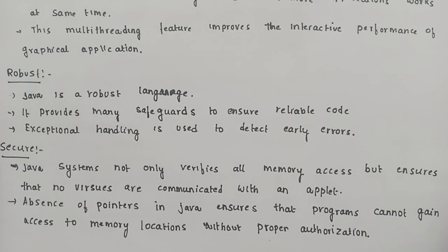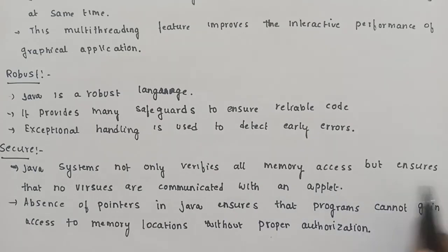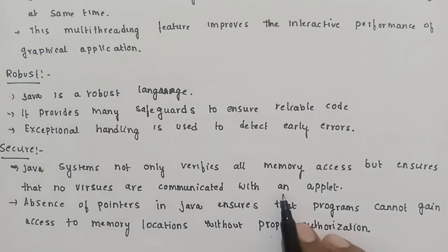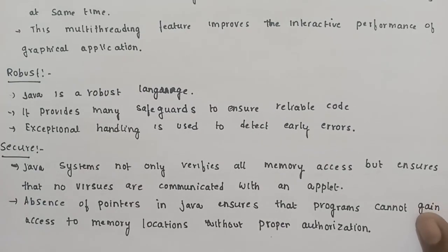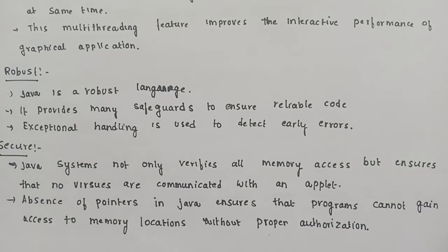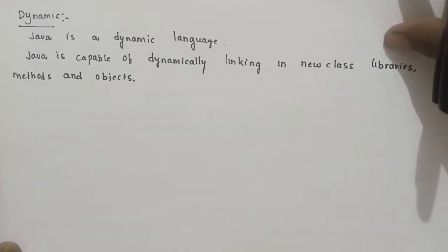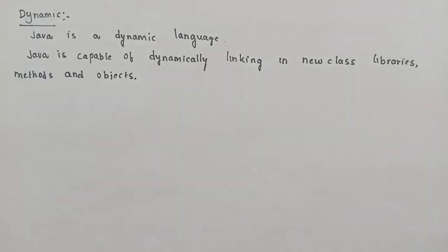Next is secure. Java systems not only verify all memory access, but ensure that no viruses are communicated with the device. If you have any memory access, you can check for viruses. In Java, there are no pointers. You can check the virus and security providers. Next is dynamic. Java is capable of dynamically linking new classes, libraries, methods, and objects.